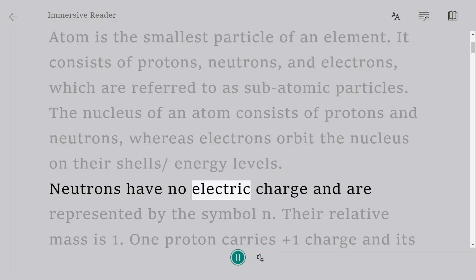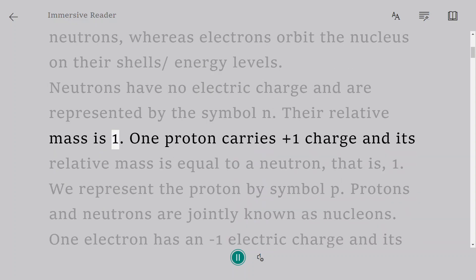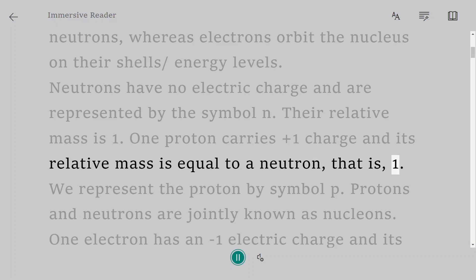Neutrons have no electric charge and are represented by the symbol N. Their relative mass is 1. One proton carries plus one charge and its relative mass is equal to a neutron, that is, 1. We represent the proton by symbol P.